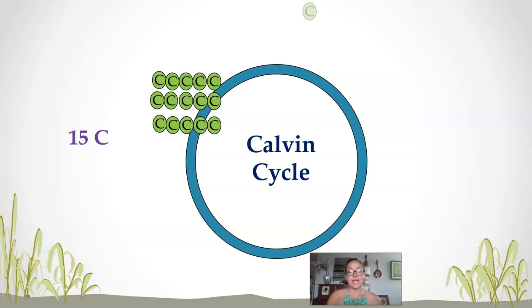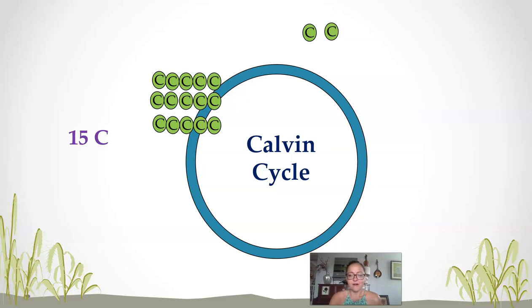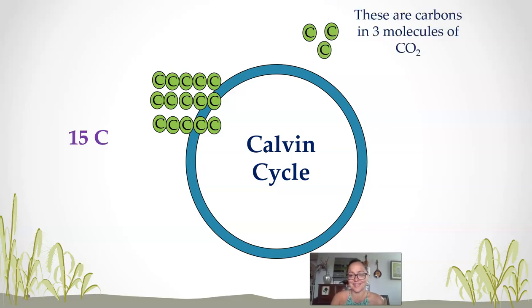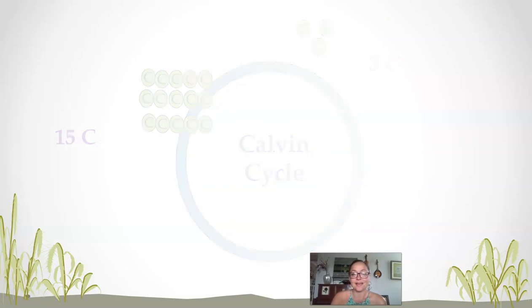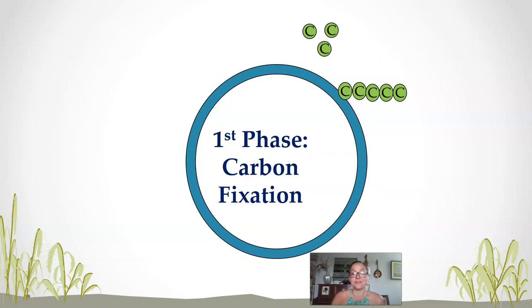There are hydrogens and oxygens on these molecules too, but it's easier if we just follow the carbons. At the beginning of the Calvin cycle, the first step is carbon fixation, where the chloroplast takes carbon dioxide out of the air — CO2 — and incorporates it into a molecule.